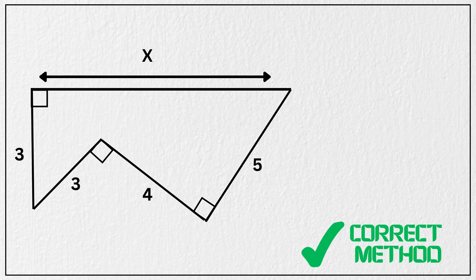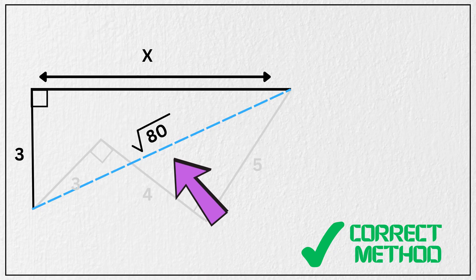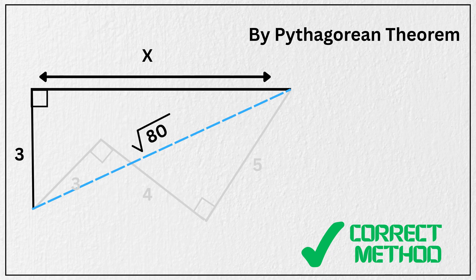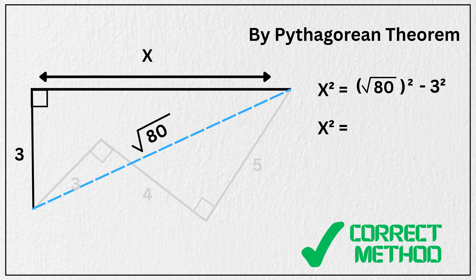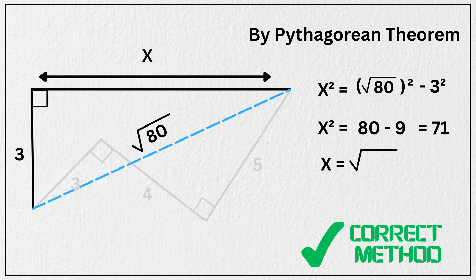Now let us return to the original shape. So this total diagonal distance, from end to end, is the square root of 80. This forms another right triangle with one leg as 3 and the hypotenuse as the square root of 80. Now using the Pythagorean theorem, X squared equals the square root of 80 squared minus 3 squared, which gives X squared equals 80 minus 9 which is 71. So the final answer is that X equals the square root of 71.